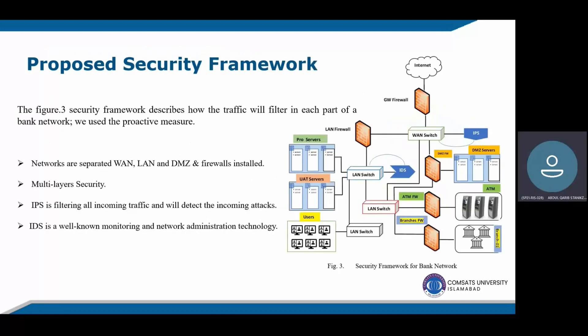Our contribution in this paper is that we propose a security framework which will be very beneficial for every bank and every financial sector. This figure shows a security framework that describes how traffic will be filtered in each part of the bank network. We use proactive measures by separating a WAN, LAN, and DMZ (demilitarized zone network), and install firewalls at each section of the network. If a firewall is first to sustain damage under any condition, the second layer will remain active and protect the network. Security technology such as IPS filters all incoming traffic and detects all incoming attacks. IDS is a well-known monitoring and centralized control technology for network infrastructure, reporting unusual activities.